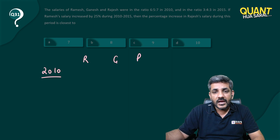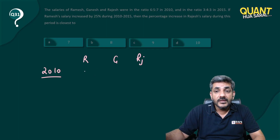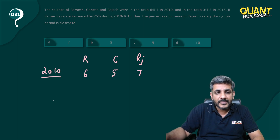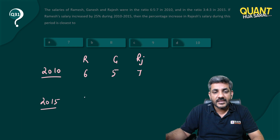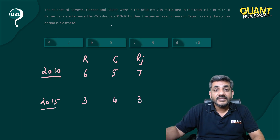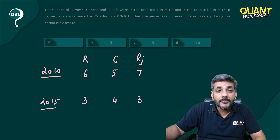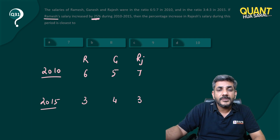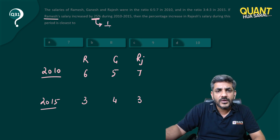In 2010, the salaries of Ramesh, Ganesh, and Rajesh — for Rajesh I am using RJ — are in a ratio of 6:5:7. In 2015, their salaries are in a ratio of 3:4:3. Ramesh's salary increased by 25 percent, which is 1/4.